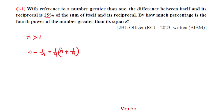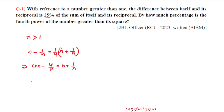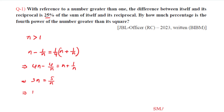Simplifying: multiply through to get 4n minus 4/n = n + 1/n. Rearranging, 4n minus n = 3n on the left side, and 4/n plus 1/n = 5/n on the right side. So 3n = 5/n. Multiplying both sides by n gives n squared equals 5/3.